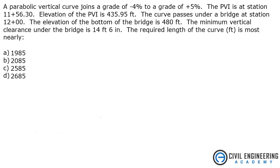The problem states a parabolic vertical curve joins a grade of minus 4% to plus 5%. The PVI is at station 11 plus 56.3. Elevation of the PVI is 435.95 feet. The curve passes under a bridge at station 12 plus 00. The elevation of the bottom of the bridge is 480 feet.